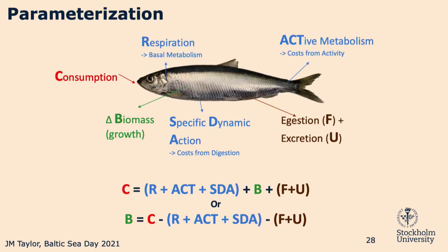When we're working with a bioenergetics model for herring, this is the mass balance equation — consumption is what goes in, what the herring eat, and that needs to be balanced by their metabolism. Metabolism can be broken down to a few different parts: respiration, which is the basal metabolism necessary energetically for the fish to keep itself alive; active metabolism, the active cost of swimming; and specific dynamic action, which is the energy needed to digest food.